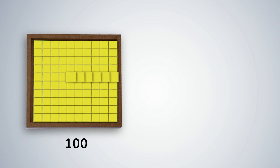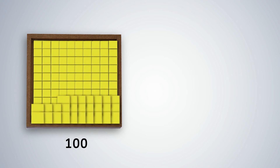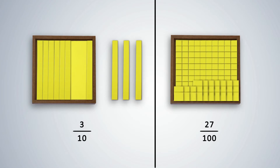6 parts out of 100 parts is written as 6 upon 100 and is called 6 hundredths. If we have 27 parts out of 100, we write it as 27 upon 100, or 27 hundredths. Fractions with a denominator of 10, 100, or 1000 are called decimal fractions.